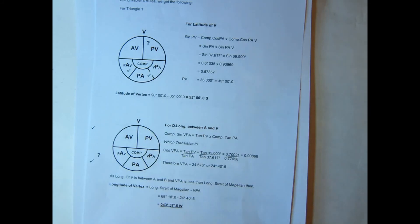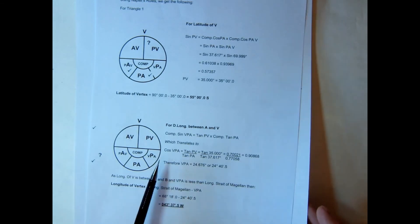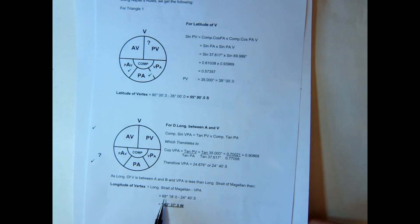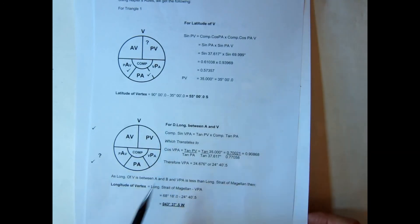Because of course we've used the initial position, when we work out our dlong we would have to apply that from our initial position, and we get the longitude coming through here is 24 degrees 40.5. So we go from 68 18 minus because it's westerly longitude, and our vertex is going to be 43 37.5.